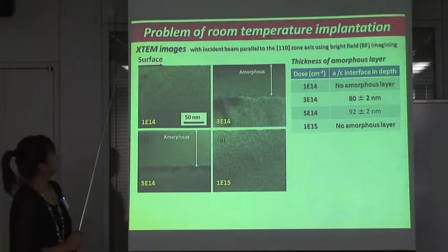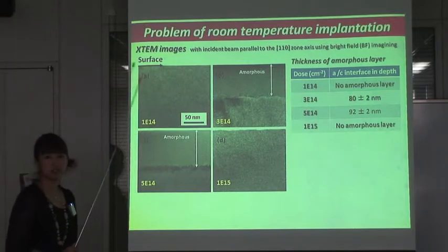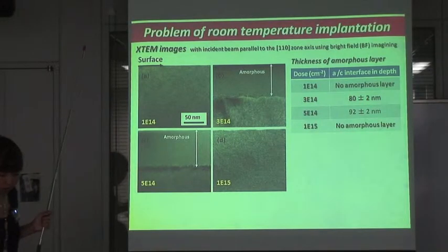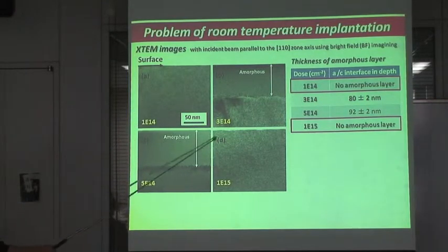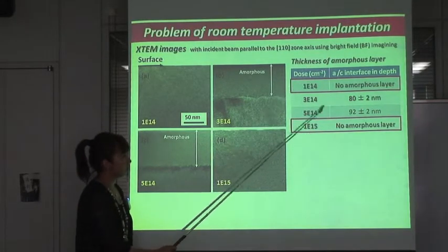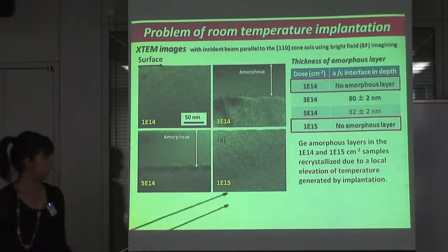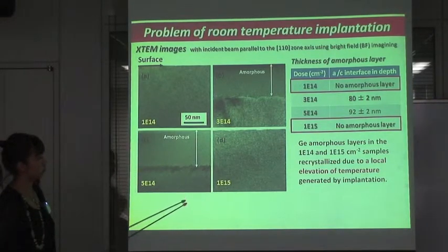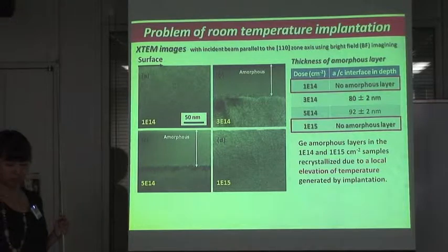Let's look at cross-sectional TEM images of the same samples shown in the previous slide. The problem is that no amorphous layer was observed in the lowest and highest dose samples, while 80 nanometer and 92 nanometer amorphous layers were observed in the middle dose samples.